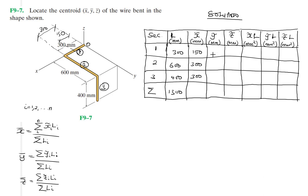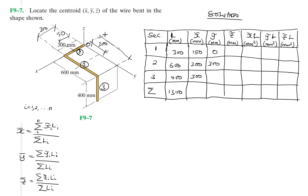Now for ȳ: section one runs along the x-axis, so its y-centroid is zero. For section two, the midpoint of the 600mm segment gives ȳ = 300 millimeters — that's half of 600, which is positive 300. For section three, it passes through at y = 600.